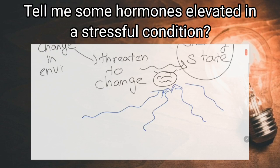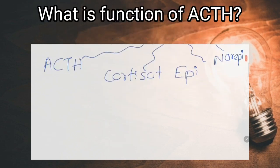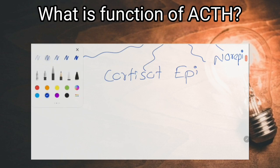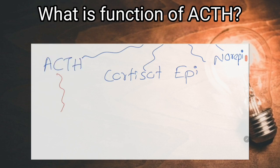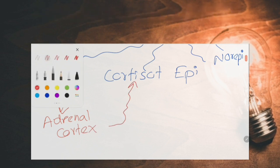Tell me some hormones elevated in stress condition. Epinephrine, norepinephrine, cortisol, and adrenocorticotrophic hormone. What is the action of adrenocorticotrophic hormone? It acts on the adrenal cortex and stimulates the production of cortisol hormone, which is a glucocorticoid.